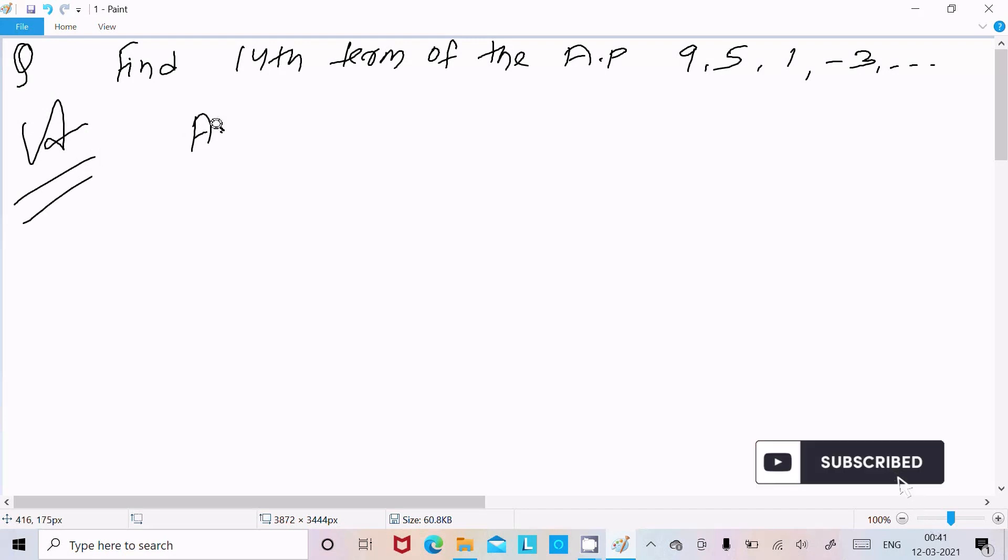First, I'm going to write the AP: 9, 5, 1, -3. This continues to infinity. Here, a is the first term, so a = 9. n is given as 14, so we need to find the 14th term.